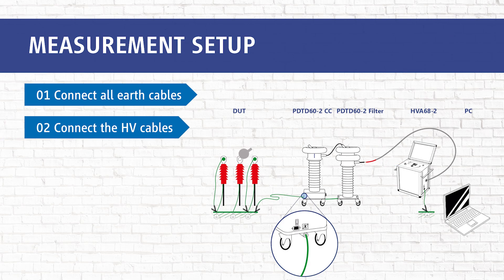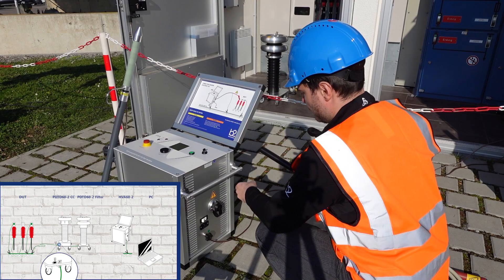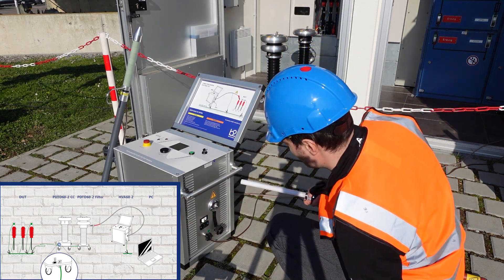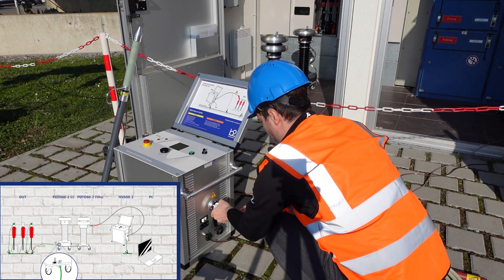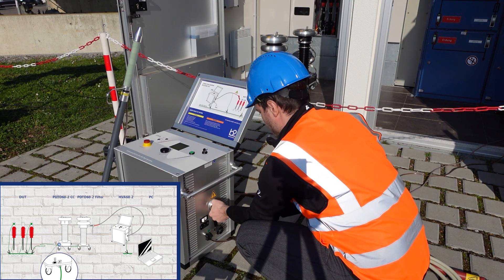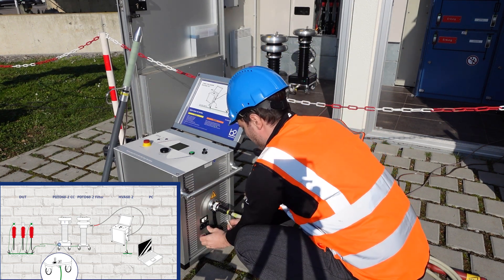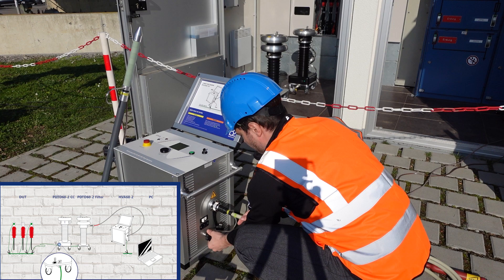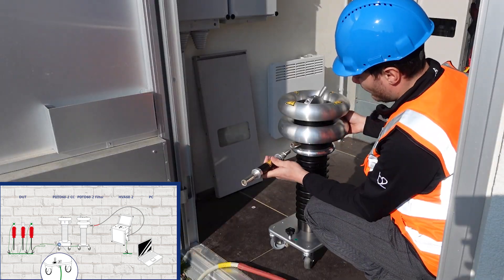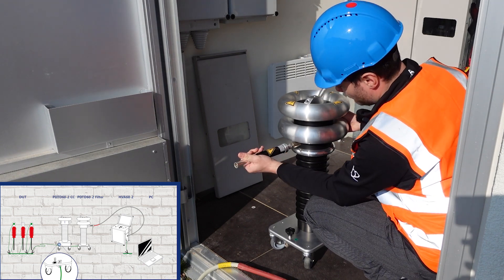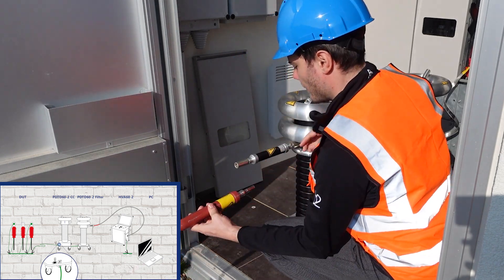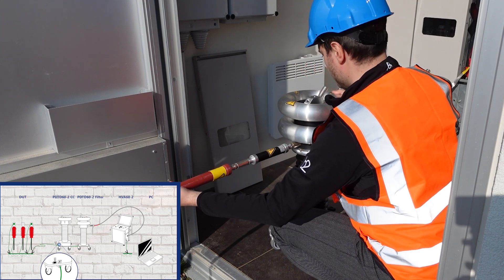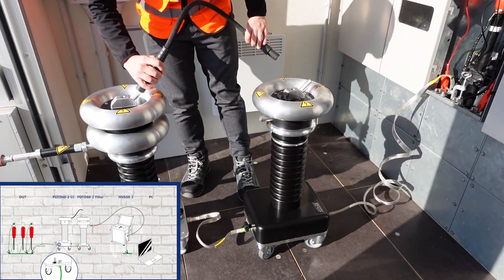In step 2 we connect the HV cables between the HVA and the PD2 filter. Please use the PD impedance. Then between the PD2 filter and the PD2CC.